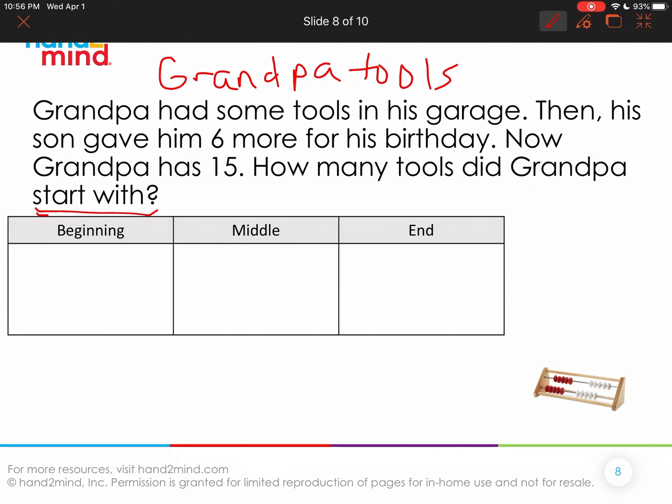Well, let's organize our information. Let's read it again. Grandpa had some tools in his garage. Then his son gave him six more for his birthday. Now grandpa has 15. How many tools did grandpa start with? So how did this begin? It began with grandpa had some tools in the garage. Do we know how many tools he had? Nope, we just know he had some. Then what happened? His son gave him six more. That's the middle of the story. And it ends with him having 15 tools.